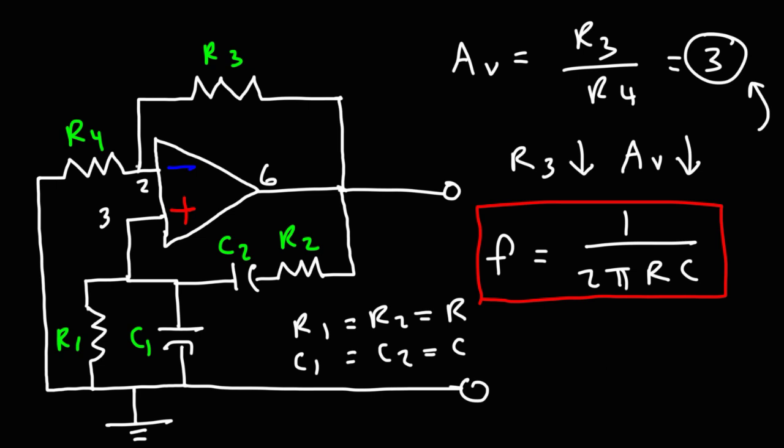So what we need to understand is this. The frequency is inversely related to R and C. As you increase the value of R, the frequency goes down. And as you increase the value of C, the frequency goes down as well.